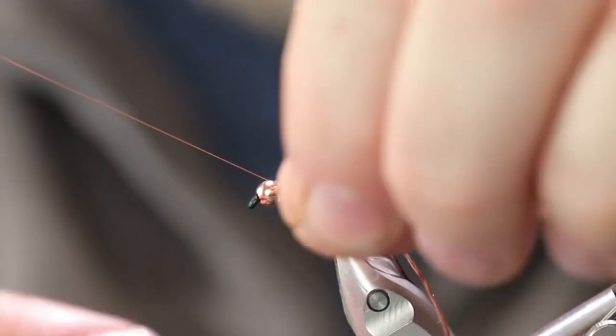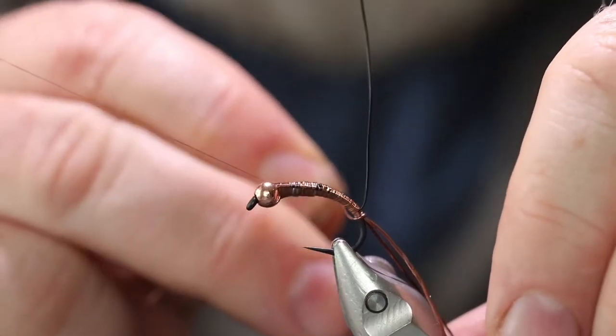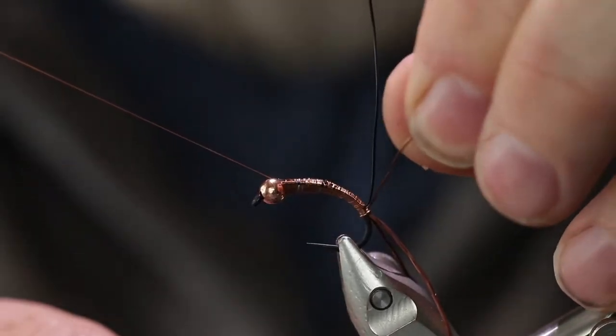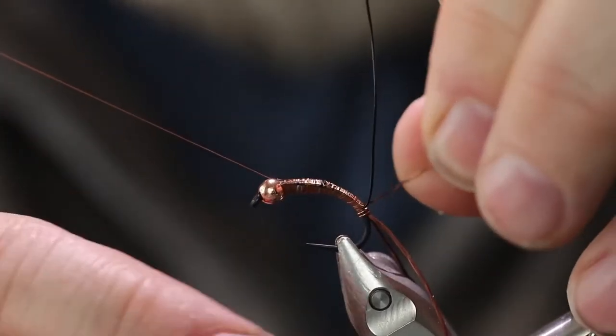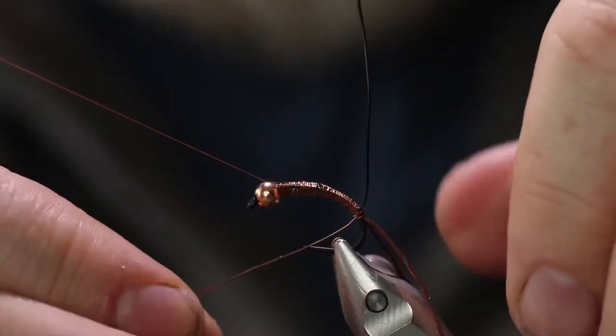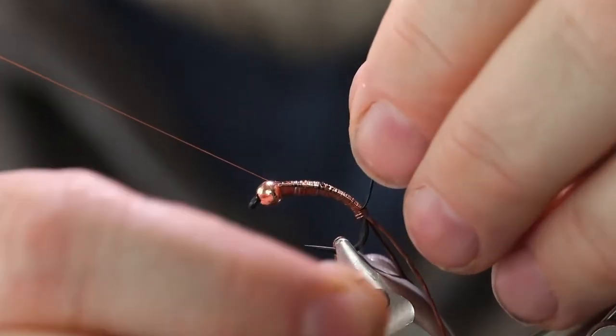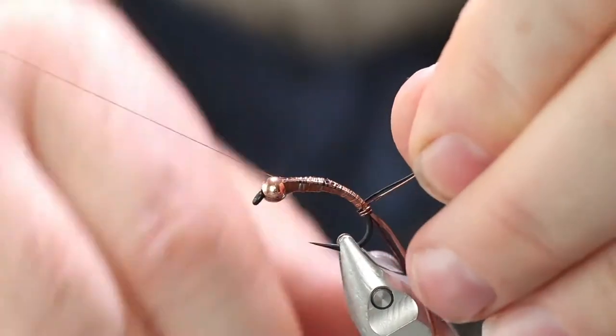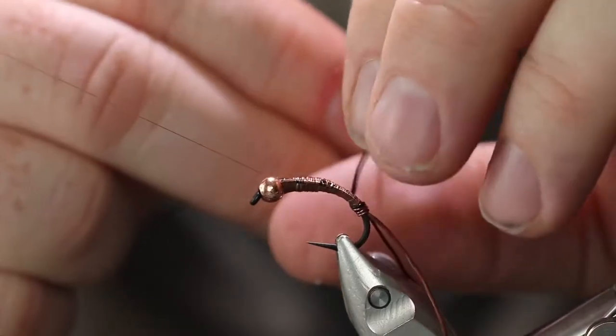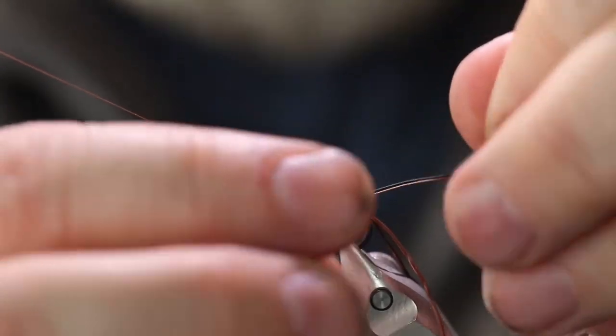When you start this fly with two sections of wire starting it, you get a really big lump on the tail. So I like to do it, get a couple of wraps of one color and then start the other color around. They come together nicely and you don't get that big ugly tail lump.